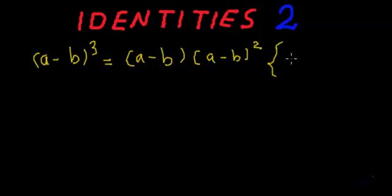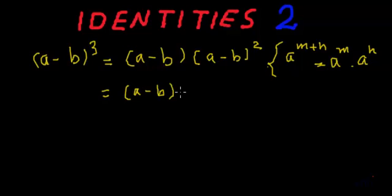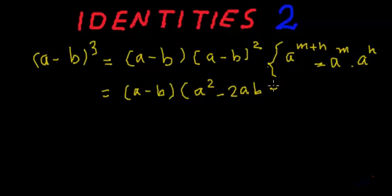We know that a to the power m plus n is equal to a to the power m multiplied by a to the power n. We can use this identity to break it, and why are we breaking it? Because we already know the formula for a minus b whole square. So if we apply this formula and expand it, this a minus b can be written as it is, and we can use the formula of a minus b whole square, which is a squared minus 2ab plus b squared.